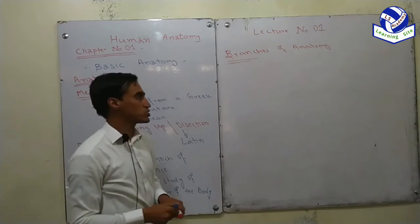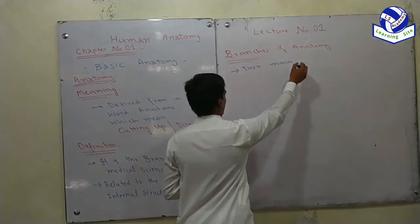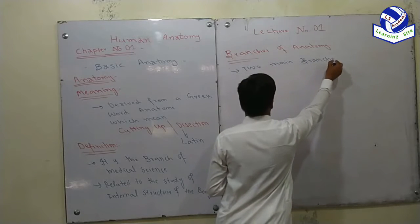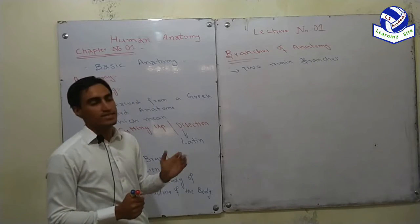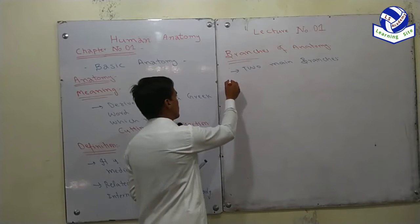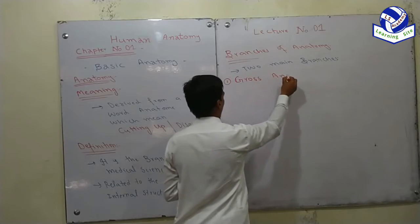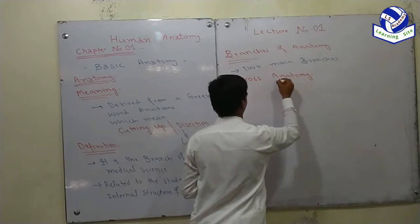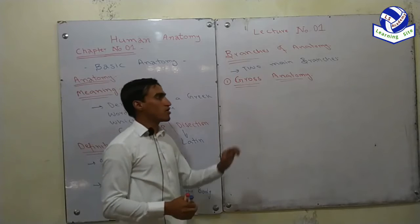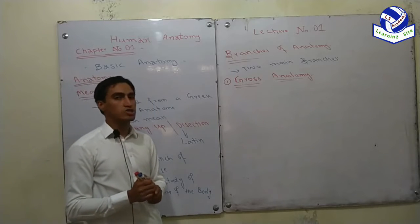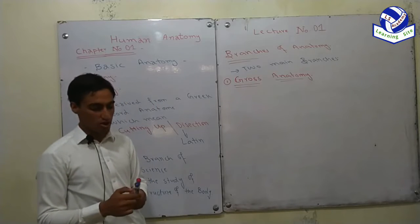There are two main branches of anatomy. The first one is gross anatomy, also called macroscopic anatomy, and the second one is microscopic anatomy. Gross anatomy is the branch of anatomy in which we study those things which can be seen through the normal human eye.